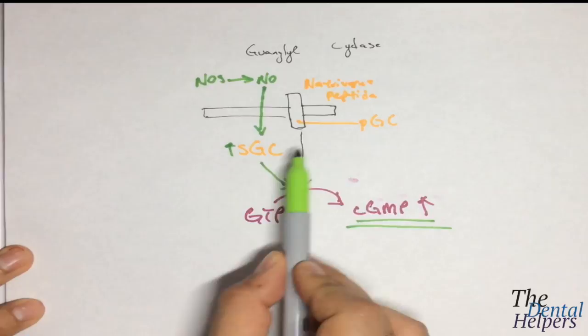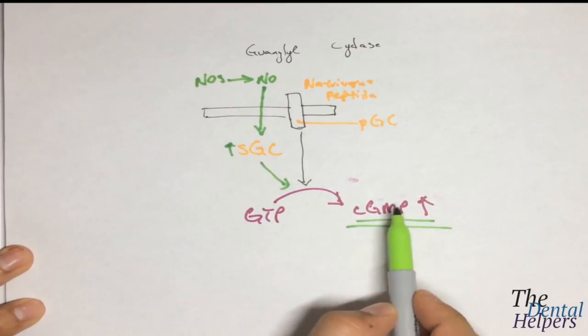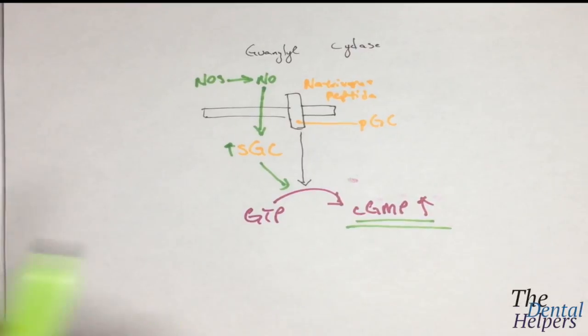So there are two different routes, the particulate route and the soluble route, leading to production of cGMP. So keeping that in mind, let's look at some of the other pathways.